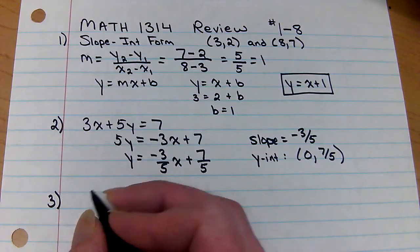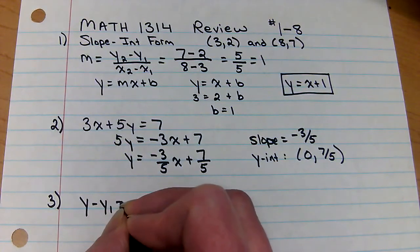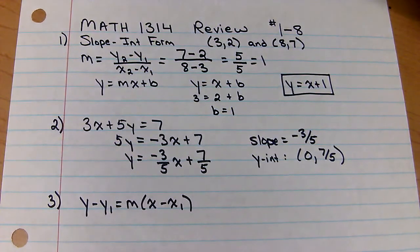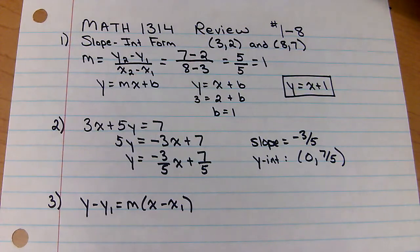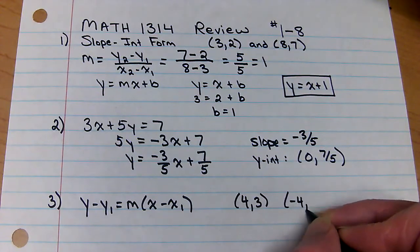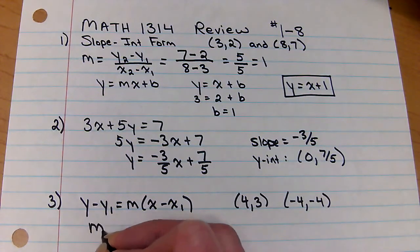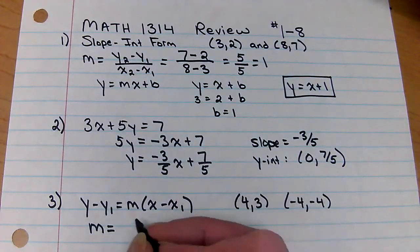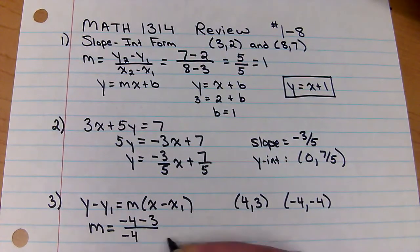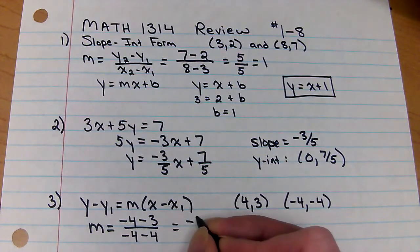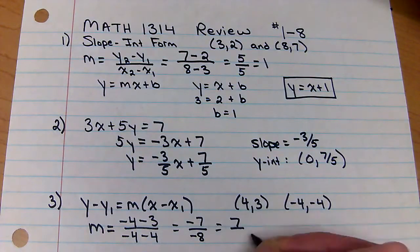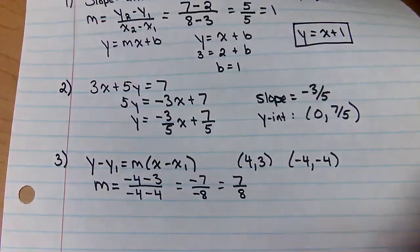Use the point-slope formula to find the slope-intercept form of the equation passing through the points four, three, and negative four, negative four. So again, the first thing we need to do is find slope. So we have the slope formula up above, negative four minus three over negative four minus four. So that's negative seven over negative eight. That's seven eighths.